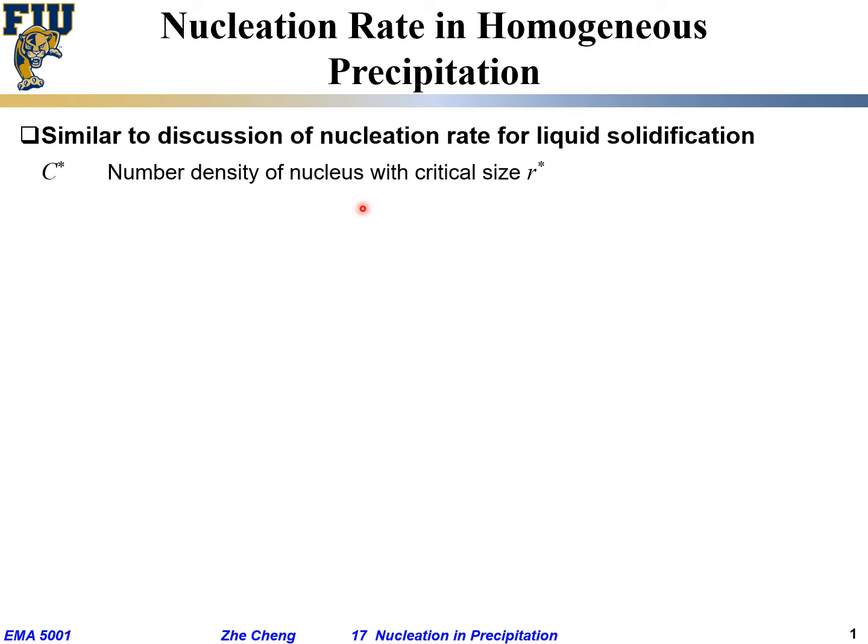r* is your critical size, which means if it's smaller than that, it has a tendency to shrink back, or in this case transform from the new beta phase back into the host alpha structure.